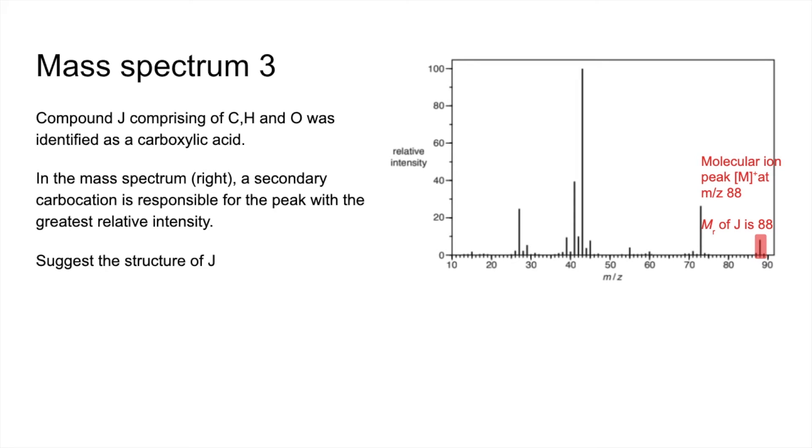We know it's a carboxylic acid, so best thing to do next is subtract the mass of the carboxylic acid group, which is 45, and that's going to give us the MR of the rest of the molecule. So the rest of the molecule has an MR of 43, which, surprise surprise, is the m/z value for this tall peak here, which we know has to be a secondary carbocation.